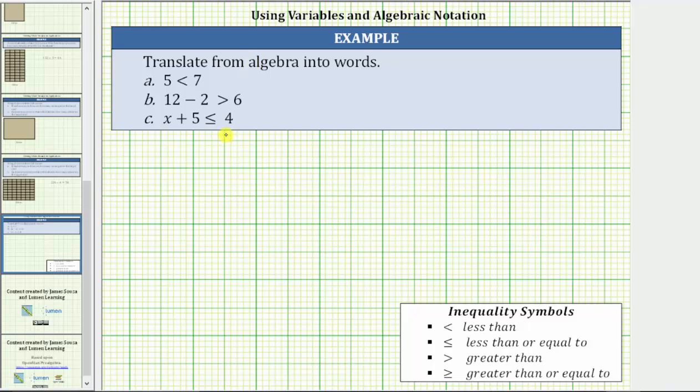We are asked to translate each inequality from algebra into words. Let's begin by reviewing the four inequality symbols. We have less than, less than or equal to, greater than, greater than or equal to.